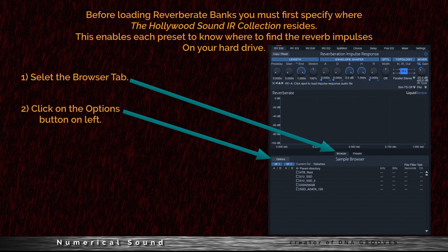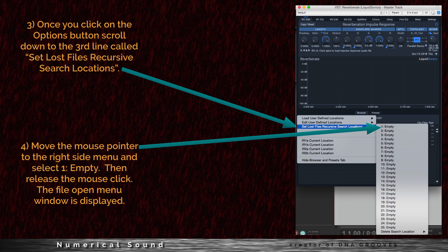Before loading Reverberate banks, you must first specify where the Hollywood Sound IR Collection resides. This enables each preset to know where to find the reverb impulses. On your hard drive, first select the Browser tab. Second, click on the Options button on the left. Third, once you click on the Options button, scroll down to the third line called Set Lost Files Recursive Search Locations.